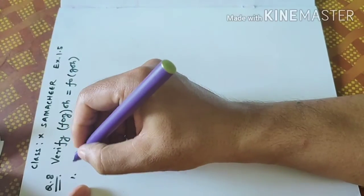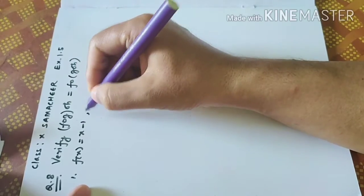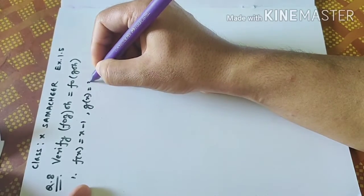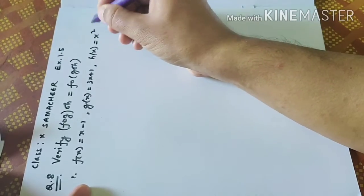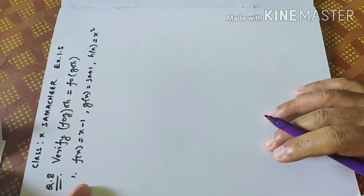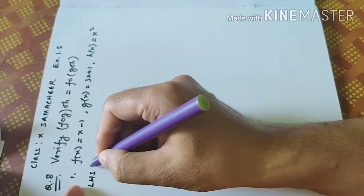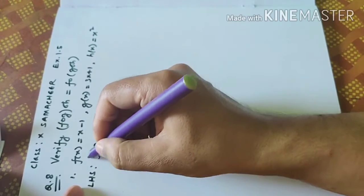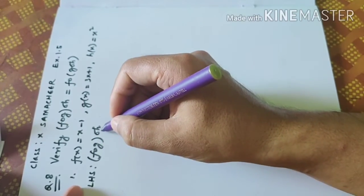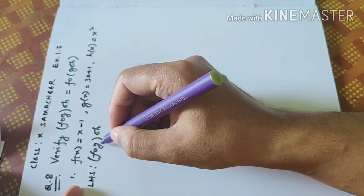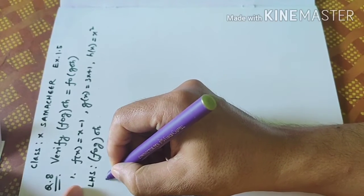For the first question: f(x) is equal to x minus 1, g(x) is equal to 3x plus 1, and h(x) is equal to x square. These are the given functions. We have to verify associativity. I will start from the left-hand side. The left-hand side is (FOG)OH. In this left-hand side, we have to do two operations. First is FOG, then after getting that answer, we do (FOG)OH. First, let me find out FOG.